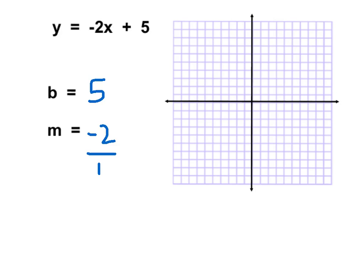We now have a rise of negative 2 and a run of positive 1. b is our y-intercept point on the y-axis — it's a positive 5, so that's going to be up here. From there, our slope says we're going to rise negative 2, meaning we move down 2 and to the right 1 to create our new points. Down 2, right 1, down 2, right 1, and now we've got a set of points to connect.